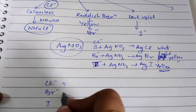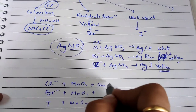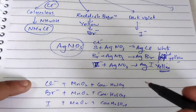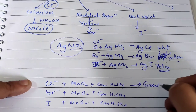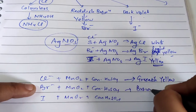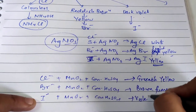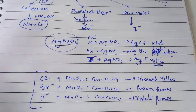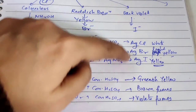The second common test for halogens: take a solid salt — chloride, bromide, or iodide — add solid MnO₂ and then concentrated H₂SO₄. On heating, different colored fumes are obtained. For chloride: greenish-yellow fumes. For bromide: brown fumes. For iodide: violet fumes. So this MnO₂ with concentrated H₂SO₄ on heating gives different color fumes, and AgNO₃ gives precipitates of different colors — these two are common tests for all three halogens.